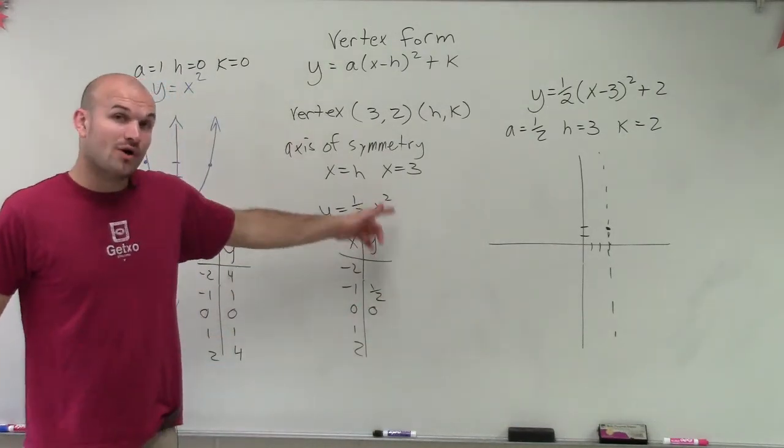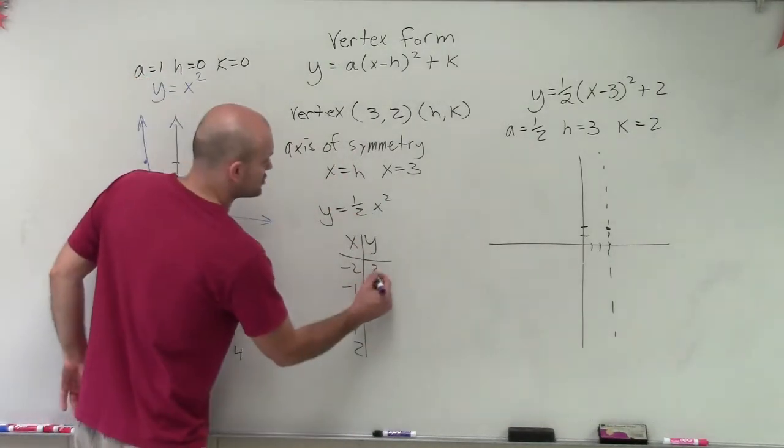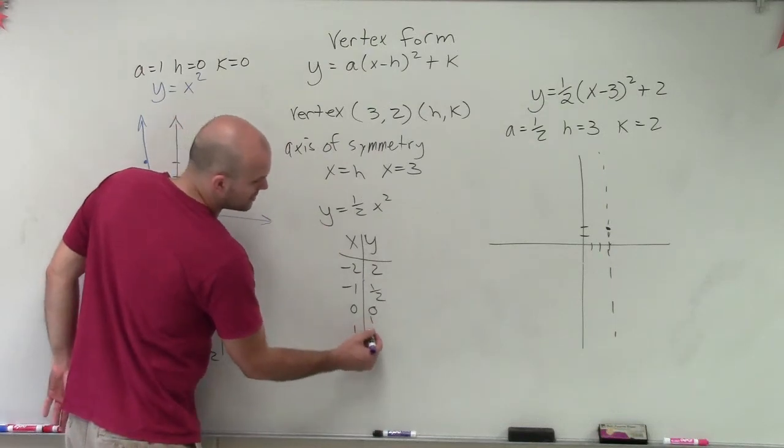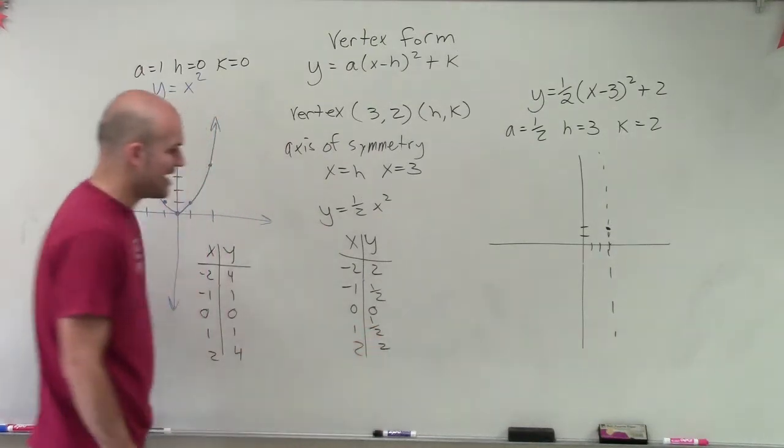Negative 2 squared is 4. 4 times 1/2 is 2. And then for x equals 1, by applying my axis of symmetry, I know that these are going to be the same values.